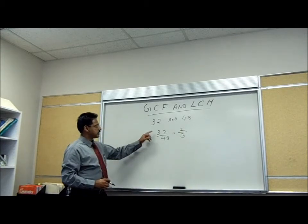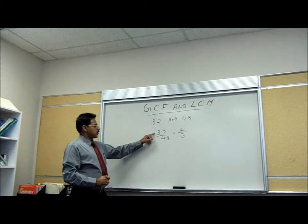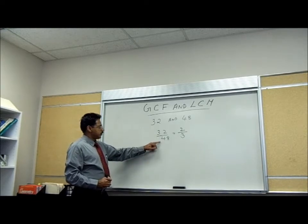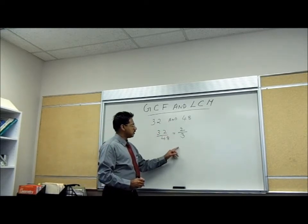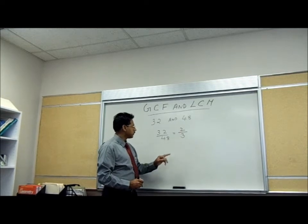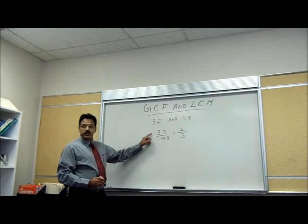Then here we see the original fraction is 32 over 48 and the reduced lowest term is 2 over 3. Consider the numerators.